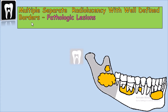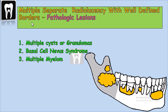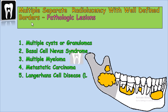The lesions that can commonly be seen as multiple separate radiolucency with well-defined borders are: number one, multiple cysts or granulomas; number two, basal cell nevus syndrome; number three, multiple myeloma; number four, metastatic carcinoma; and number five, Langerhans cell disease. We are going to talk about each lesion step by step.